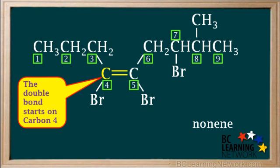Because the double bond starts on carbon number four, we write a four just before the nonene. Remember, numbers within a name have dashes on both sides.